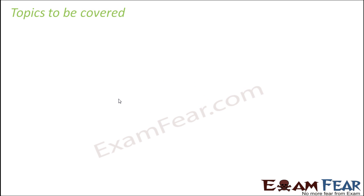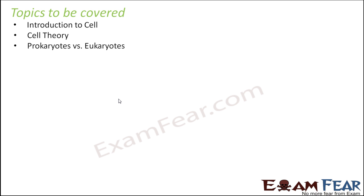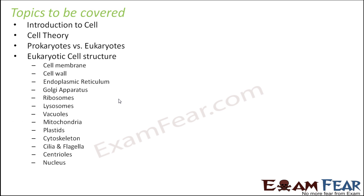Topics to be covered in this lesson are: Introduction to Cell and Cell Theory, Prokaryotes vs. Eukaryotes, and Eukaryotic cell structure — wherein we'll talk about cell membrane, cell wall, endoplasmic reticulum, Golgi apparatus, ribosomes, lysosomes, vacuoles, mitochondria, plastids, cytoskeletons, cilia and flagella, centrioles, and nucleus. Then we'll talk about prokaryotic cell structure.